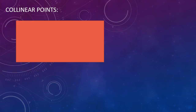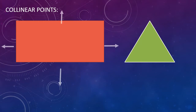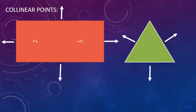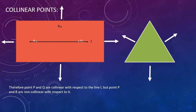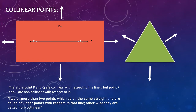Collinear points. We have two planes which could be extended indefinitely from all sides. If we take two points on any of these planes passing through a line L, then the points P and Q are called collinear points with respect to the line L. But if we have a point R, the point R is non-collinear with respect to the line L. So we can conclude: two or more points which lie on the same straight line are called collinear points with respect to that line; otherwise they are non-collinear.